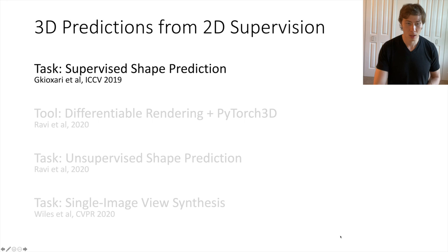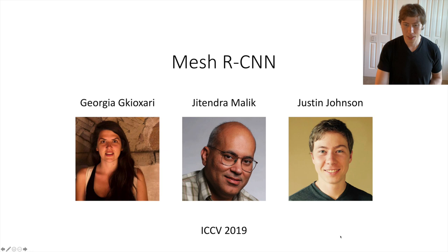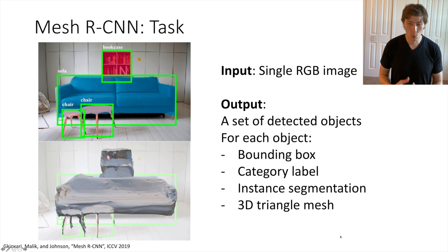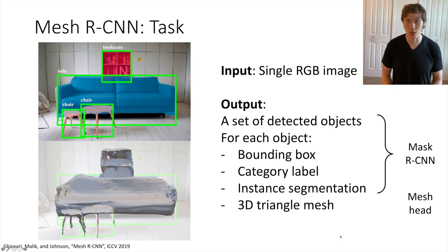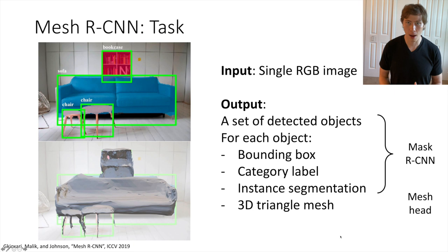Starting with supervised shape prediction — last year at ICCV 2019, Georgia, Jatendra, and I published MeshRCNN, which extends the instance segmentation task into the third dimension. MeshRCNN inputs a single RGB image and outputs a set of detected objects, each with a bounding box, a category label, a 2D instance segmentation mask, and most crucially, a 3D triangle mesh giving the full 3D shape of that predicted object. The real magic is figuring out the neural network structure that can make this 3D triangle mesh prediction.